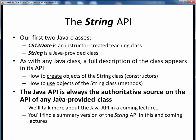It's important to always keep in mind that the Java API is always the authoritative source for the API of any Java-provided class. We'll talk more about accessing the Java API online in a coming lecture. Once you can get to the Java API online, you'll have everything you need at your fingertips.